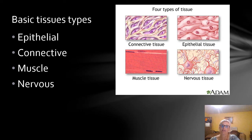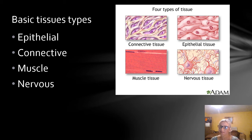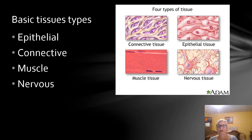We have four basic tissue types. We have connective tissue, which is going to be things like your tendons and ligaments. Epithelial tissue, which is going to be your skin-type tissues. Muscle tissues, which include skeletal and cardiac muscle. And nervous tissue, which innervates all these other tissues and allows us to communicate with the brain and control and sense things in our environment.